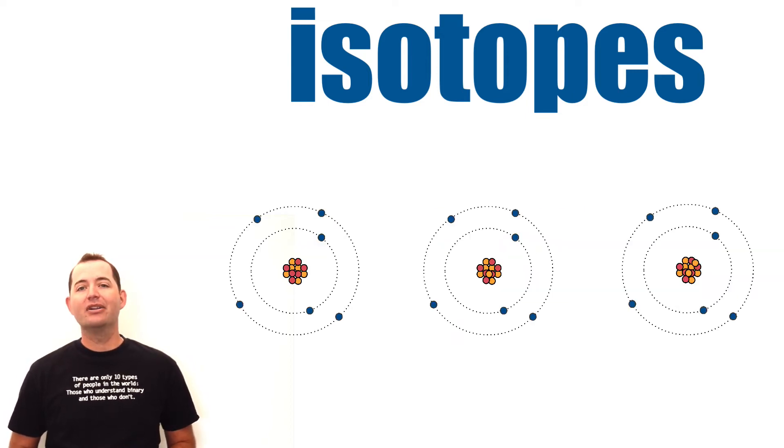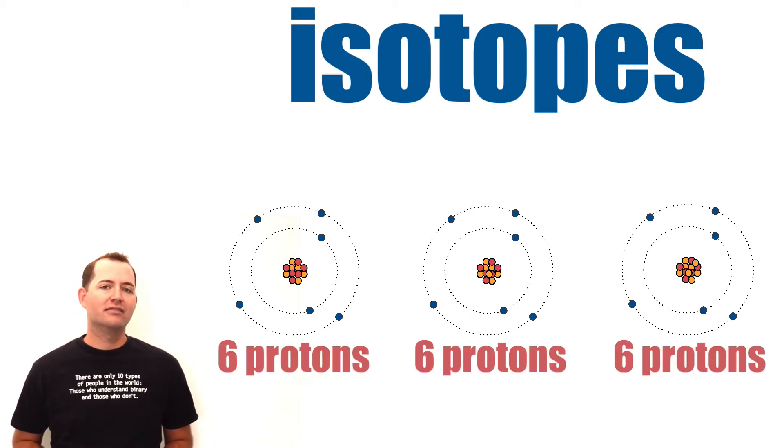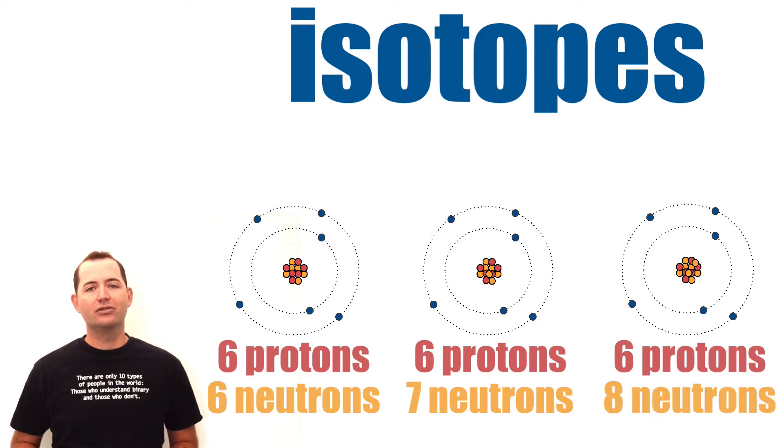Carbon is often used as an example of different isotopes. Carbon will always have six protons in its nucleus, but it can have six, seven, or eight neutrons. Each of these configurations represents a different isotope of carbon.